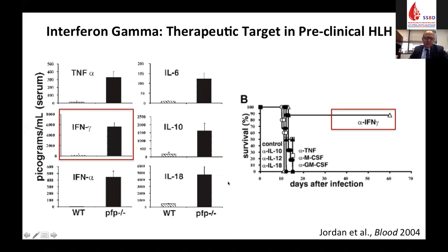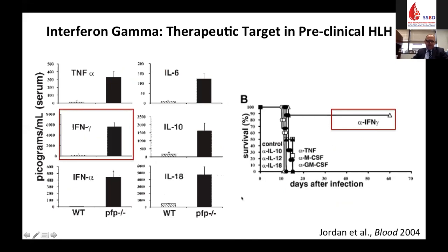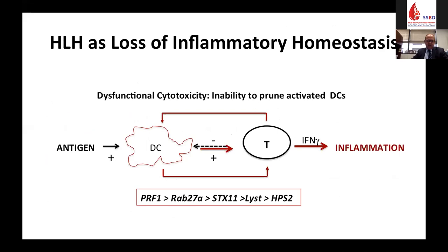Michael Jordan developed a mouse model of HLH — a perforin-deficient mouse that, when infected with LCMV, develops an HLH-like phenotype. The cytokine storm of elevated pro-inflammatory cytokines has been associated with HLH, but Mike tested each cytokine with an antibody and found that specifically blocking interferon gamma increased the lifespan of mice. This really supported the concept of interferon gamma blockade as a therapeutic strategy for HLH.